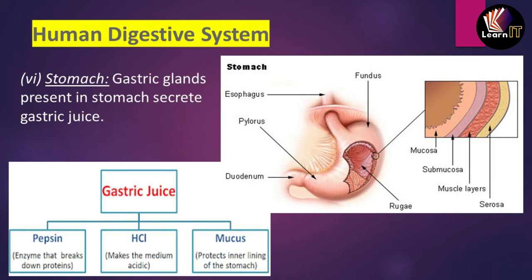The next topic is the stomach. In the diagram you can see the esophagus entering from the right into the fundus, followed by the rugae and the pylorus. The stomach wall is made of four layers: the outermost is the serosa, then the muscle layer, then the submucosa, and the innermost is the mucosa.